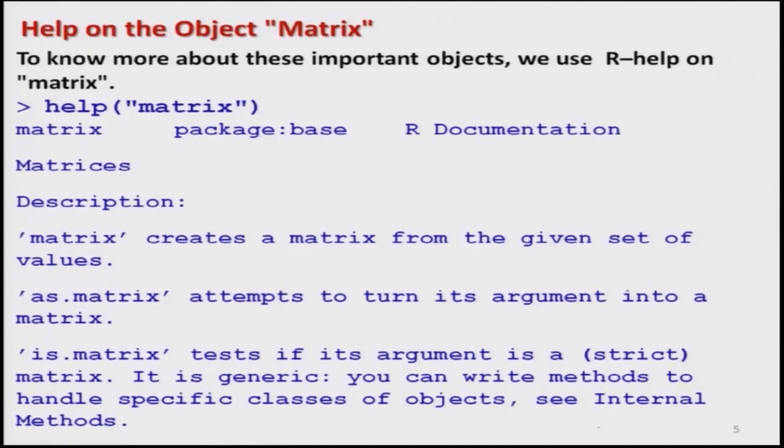Now we come to a more general aspect. Up to now I have used the `matrix` command and taken different examples to show how a matrix can be created, how data can be entered, and how we can control the number of rows, columns, and whether data is entered row-wise or column-wise. But we would also like to know what the general command is to enter data into a matrix and what different options are available.